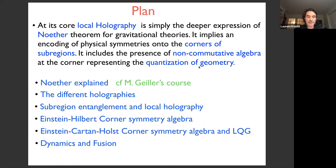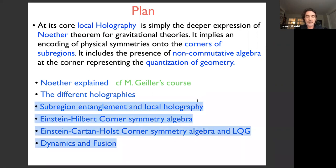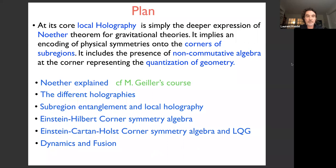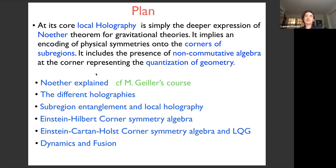The plan of the talk is as follows: I'll summarize the main aspects of Noether's theorem, discuss the different types of holography that exist, entanglement of sub-regions, and then focus on the corner symmetry algebra of Einstein-Hilbert and Einstein-Cartan gravity, seeing how it gives a completely new perspective on gravity.